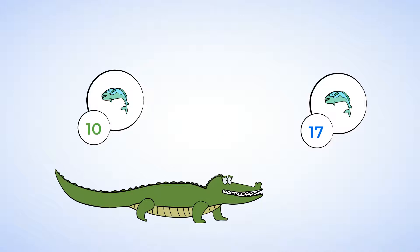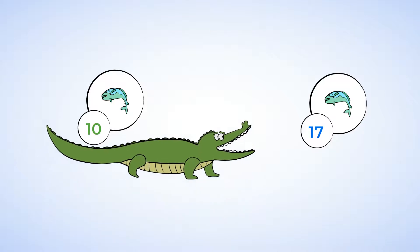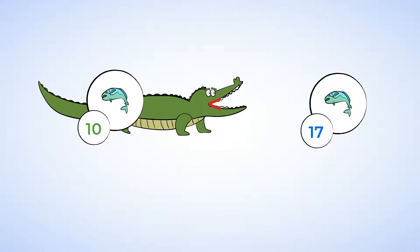So the alligator will choose to eat 17 fish. It'll face the number 17, open its mouth, and chomp. Now its mouth looks like the less than symbol. And we can read this as 10 is less than 17.